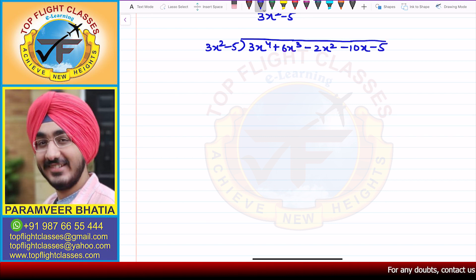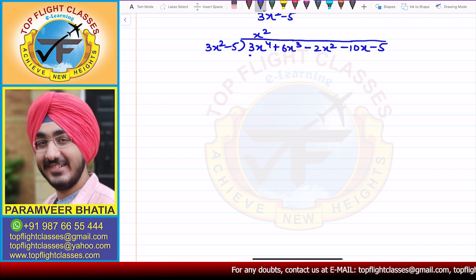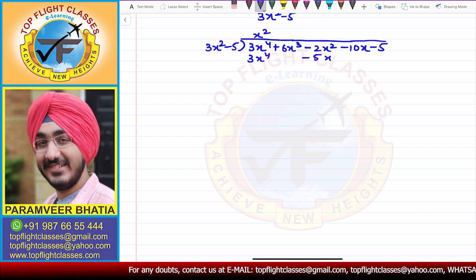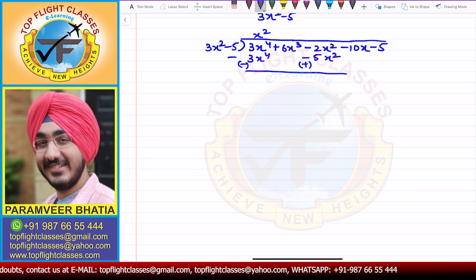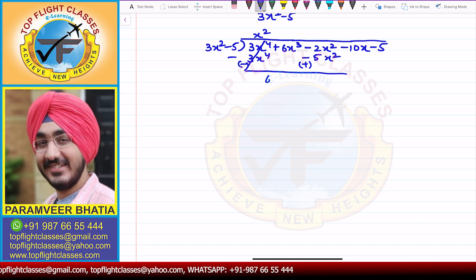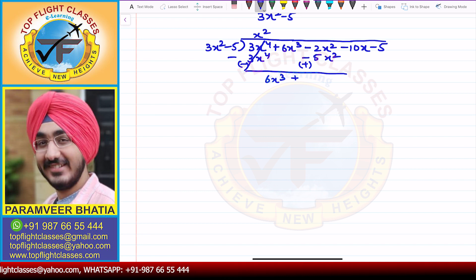First, we have to eliminate x⁴. So we multiply to get 3x⁴, that is 3x⁴, then minus 5x². When you subtract, the signs will change. On the change of signs, 3x⁴ minus 3x⁴ gets cancelled. Then 6x³ as it is, minus 2x² plus 5x² gives plus 3x², minus 10x minus 5 as it is.